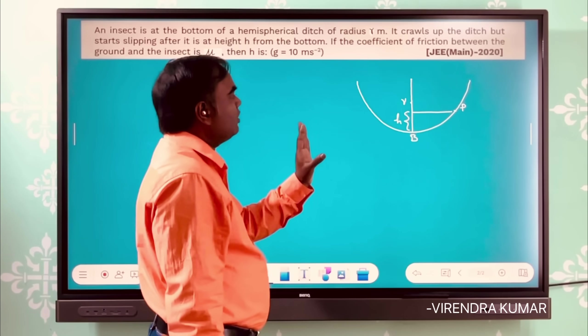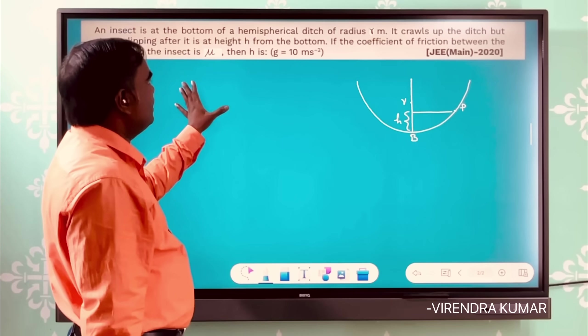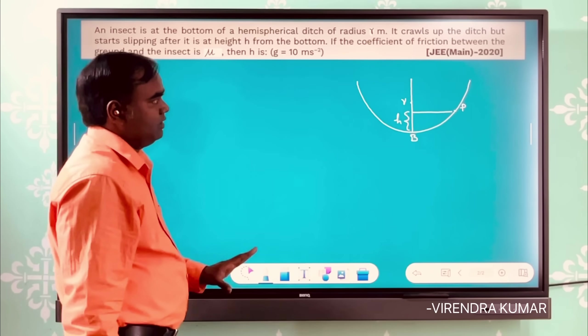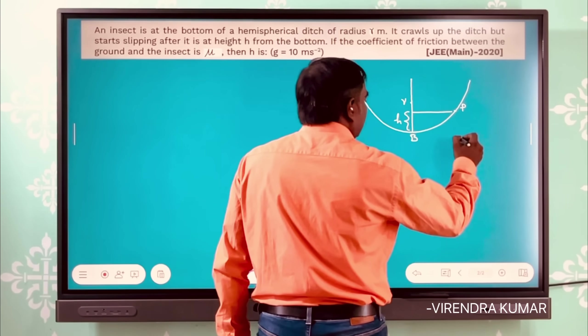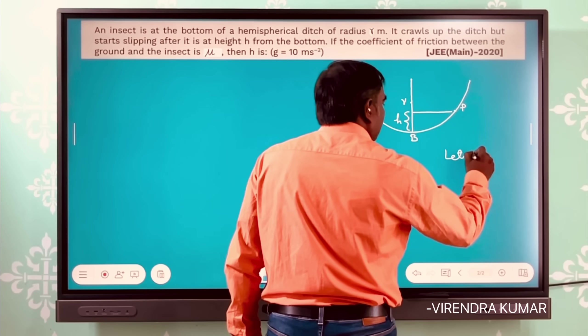You are given only the coefficient of friction μ and radius r of the hemisphere. So let mass of the insect be m kg.